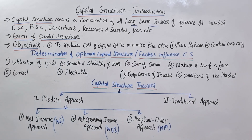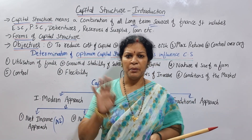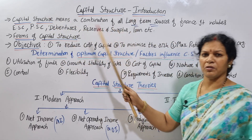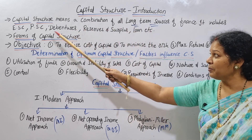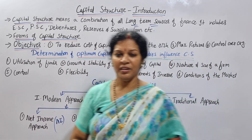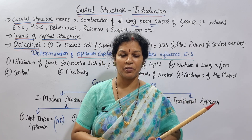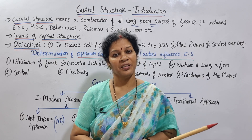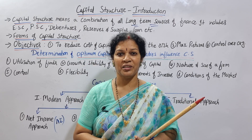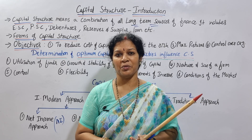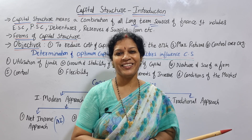To summarize: capital structure means nothing but a combination of all long-term sources of finance — equity, preference shares, debentures, reserves, and loans. In the next class, we will cover the capital structure theories. Please follow this channel, share the videos with fellow students, and practice well. From Commerce and Management Academy — prepare well and stay connected. Good luck!